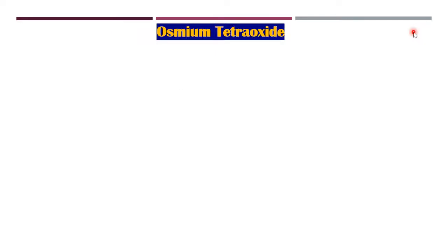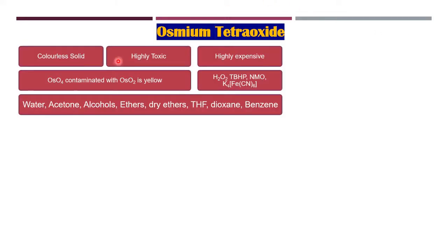Hello students, welcome to Swarovski Classes. Today we are going to discuss osmium tetroxide, which is in continuation of the lecture series on oxidizing reagents. Physical properties: colorless solid, highly toxic, highly expensive. If it appears slightly yellowish, then the osmium tetroxide is being contaminated with OsO2. Because it is a highly expensive and highly toxic reagent, the idea is to use it in small amounts.